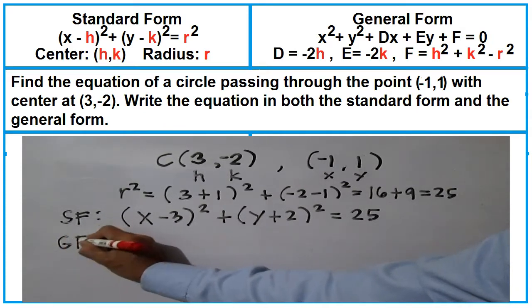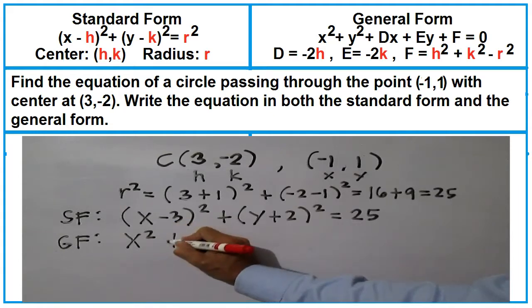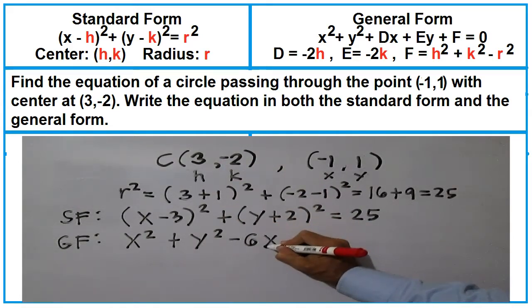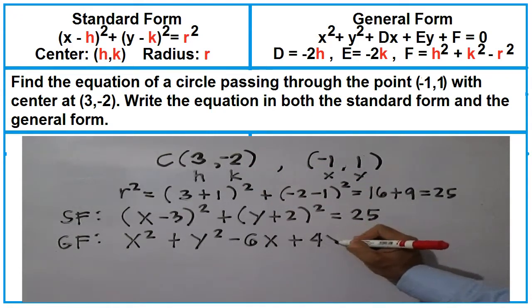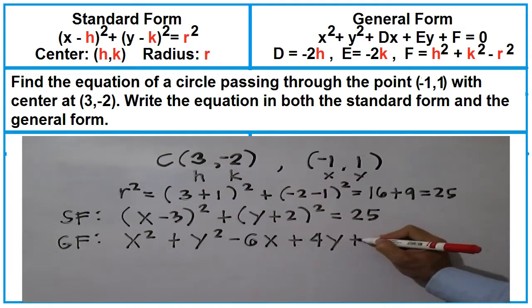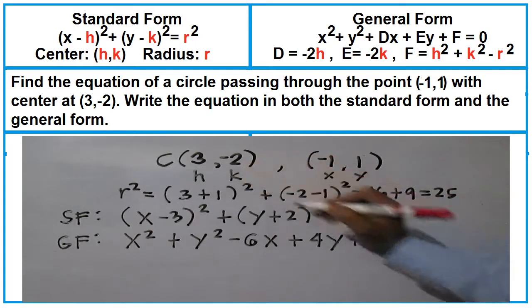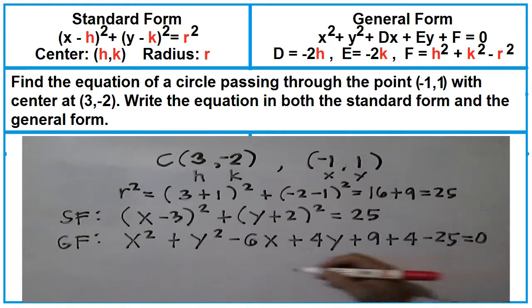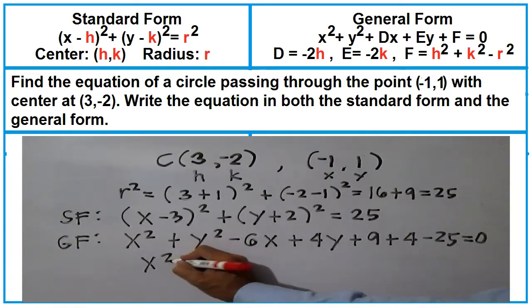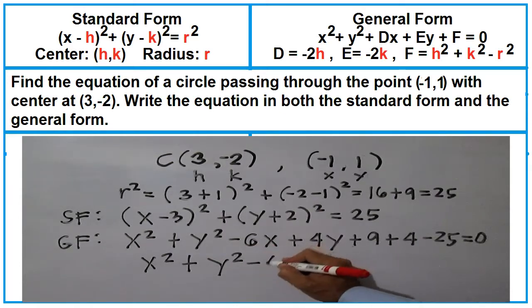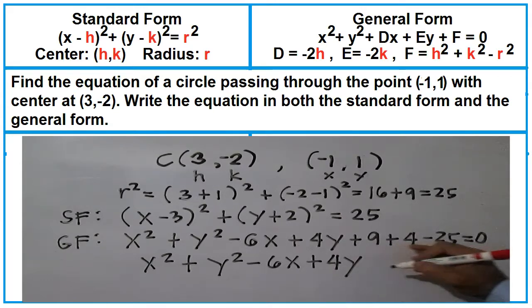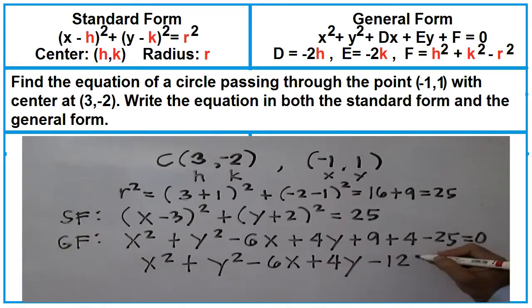The general form is x squared plus y squared. Negative 2 times 3 is negative 6, minus 6x. Negative 2 times negative 2 is 4, plus 4y. 3 squared plus negative 2 squared minus 25 equals 0. Simplifying: x squared plus y squared minus 6x plus 4y, and 9 plus 4 is 13, minus 25 is negative 12, equals 0.